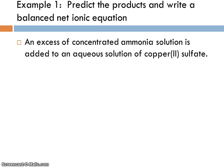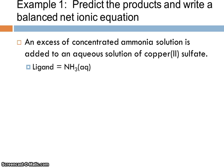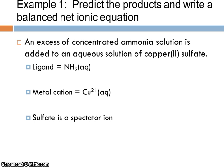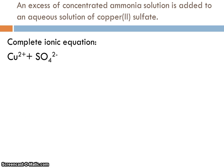So let's do an example together. We're going to predict the products and write a balanced net ionic equation. Here's the reaction. An excess of concentrated ammonia solution is added to an aqueous solution of copper-2 sulfate. So when we pull this apart, I have an excess of concentrated ammonia. Well, that's telling me that ammonia is my ligand. I've got copper-2 sulfate. It's really the metal cation that I care about. And that's copper with a plus-2 charge. Sulfate here is just a spectator. It's really not going to be doing anything in the reaction. So we're ready now to say, oh, I've got a complex ion. I've got a concentrated solution. I've got something that can be the central atom in this complex ion.